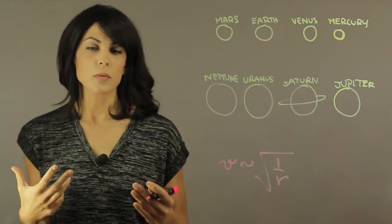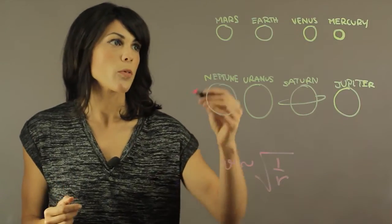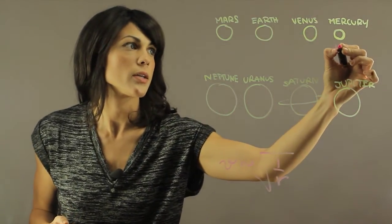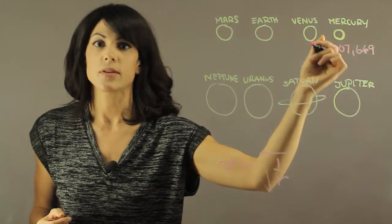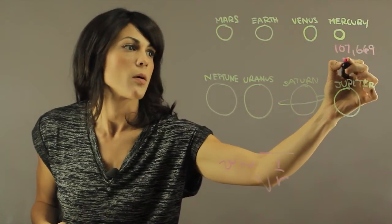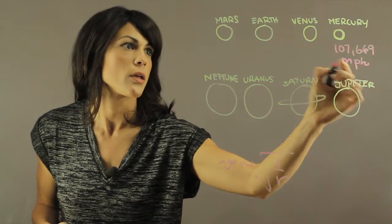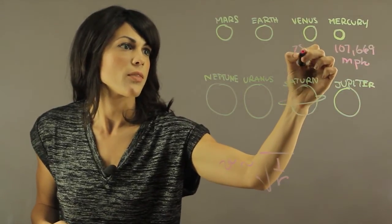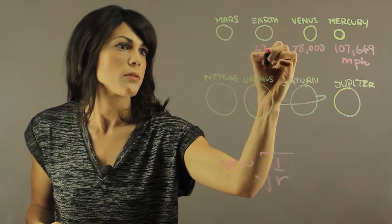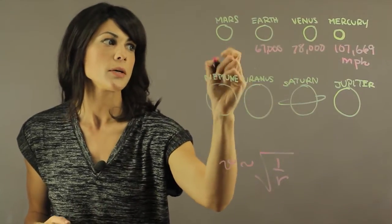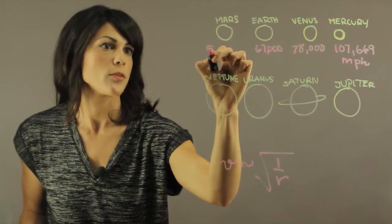Now exactly how far? Well, let's put some numbers on the board. So Mercury is going at 107,669 miles per hour. Venus is going at 78,000. Earth is going at 67,000. I will round up. And then Mars is going about 54,000.